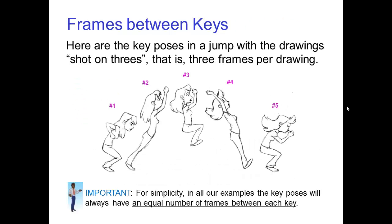As an example of how this works, here are some key poses for the animation of a jump. Now this animation is shot on threes, that is, there are three frames between each drawing. Key number one is the first pose, and then three frames later is key number two, then three frames later key number three, and so forth.